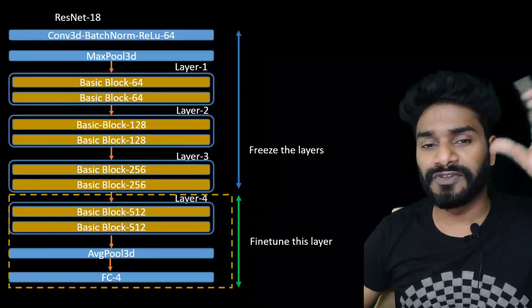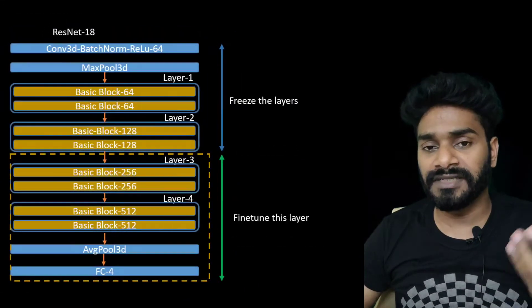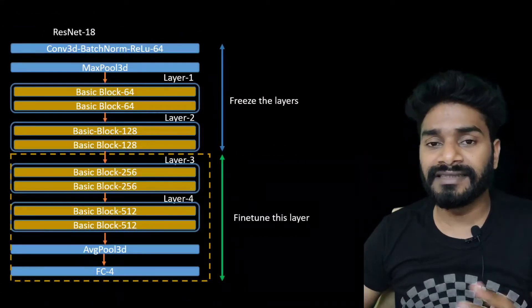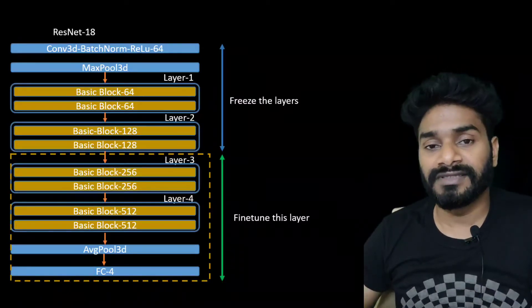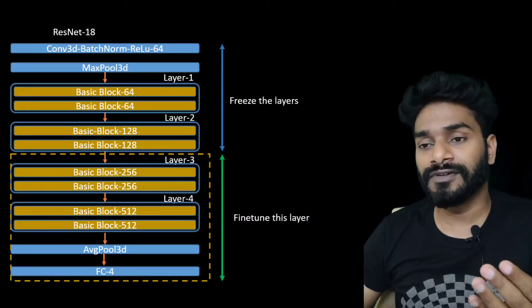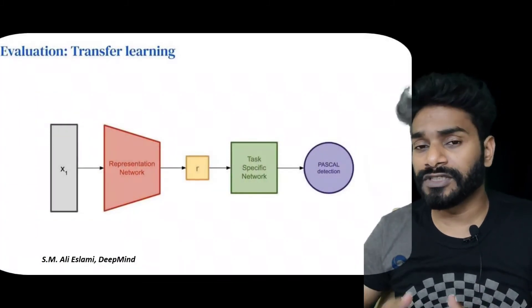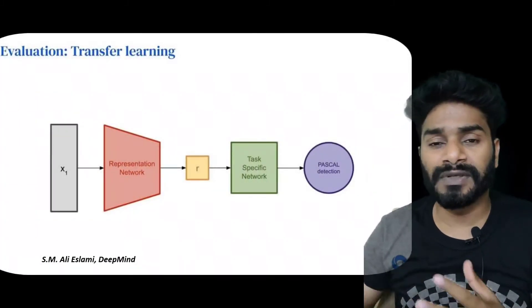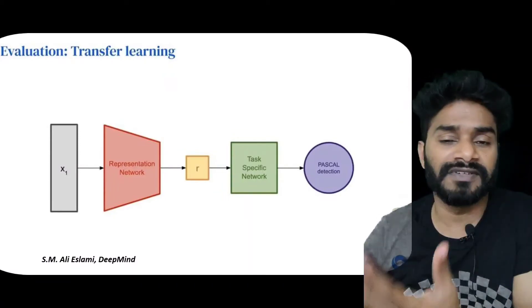We did freezing of different layers and then fine-tuning different layers. We saw that in our case with ResNet18, the features after layer two gave the best result. When fine-tuned, the features after layer two gave the best result on the actual dataset. This is one way of evaluating a self-supervised learning model through transfer learning, where you transfer the learned representation to a different target task.